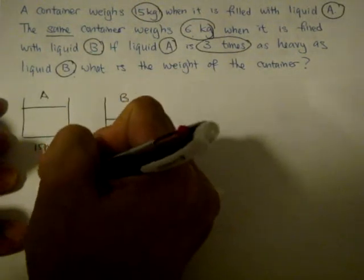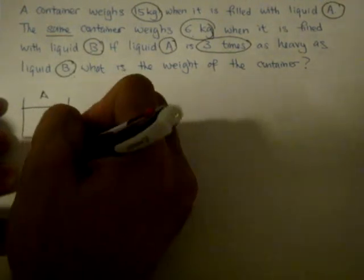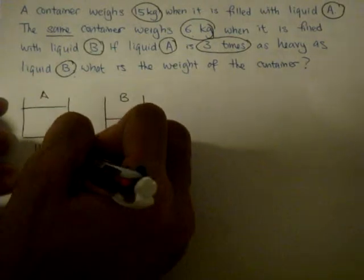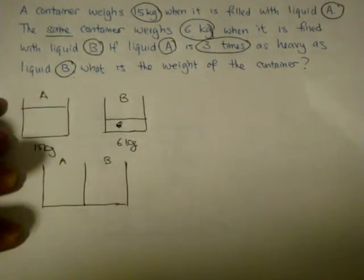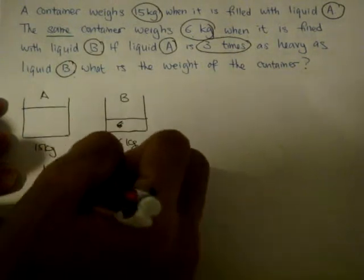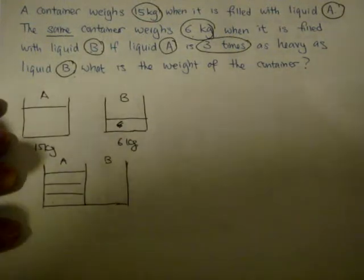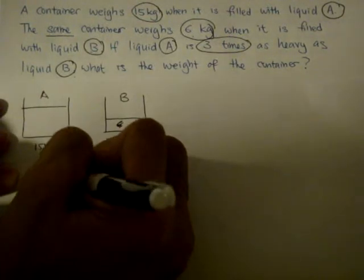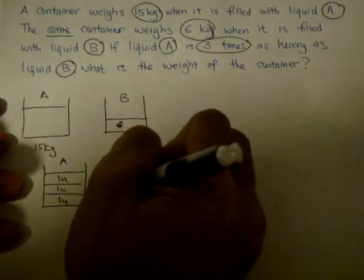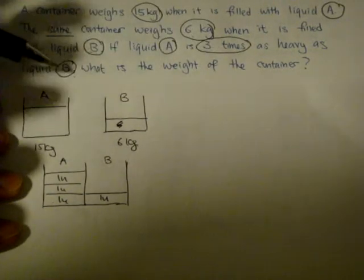So A and this is B. 3 units for A - 1, 2, 3. Three units for A, see? Three units 1, 2, 3. B, 1 unit. Of course, how do I know? The question says so - 3 for A, 1 unit is for B.